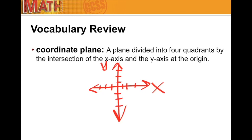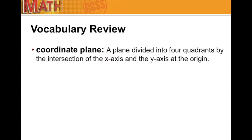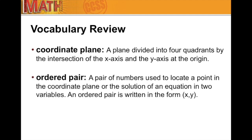This is what our coordinate plane looks like, where you have the x-axis and the y-axis with your intervals tick-marked. On your vocabulary page, if you want to draw a picture of that coordinate plane, that may be helpful for some of you. Next word: ordered pair — a pair of numbers used to locate a point in the coordinate plane.